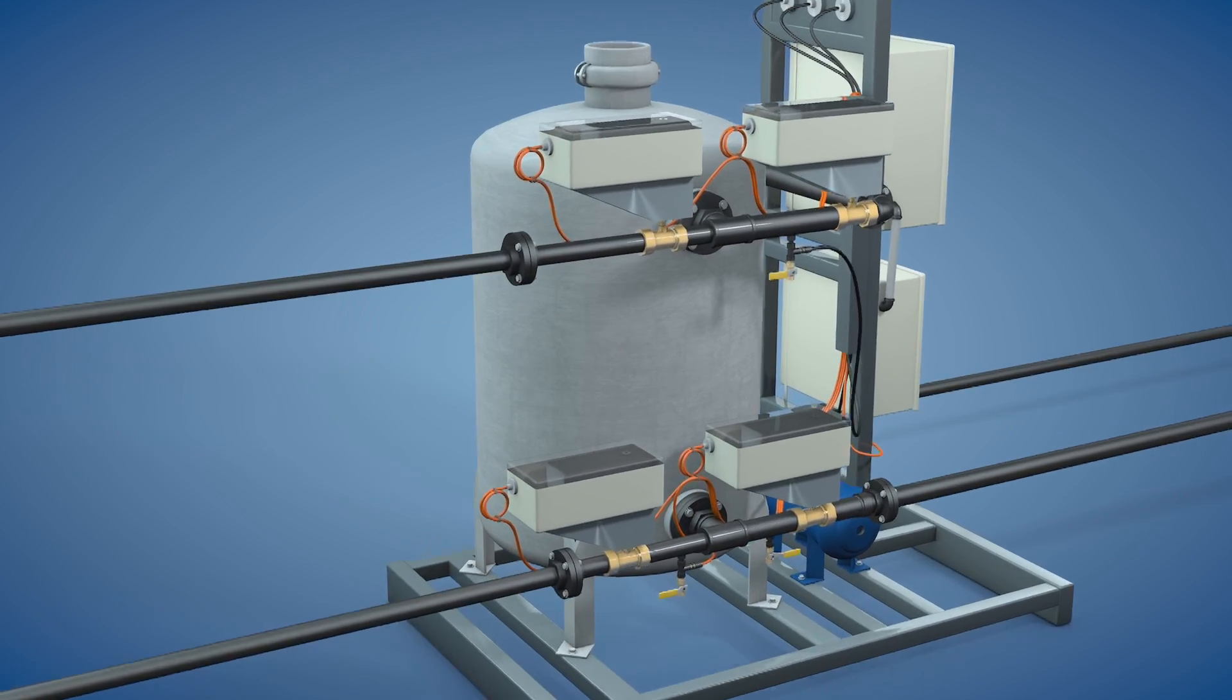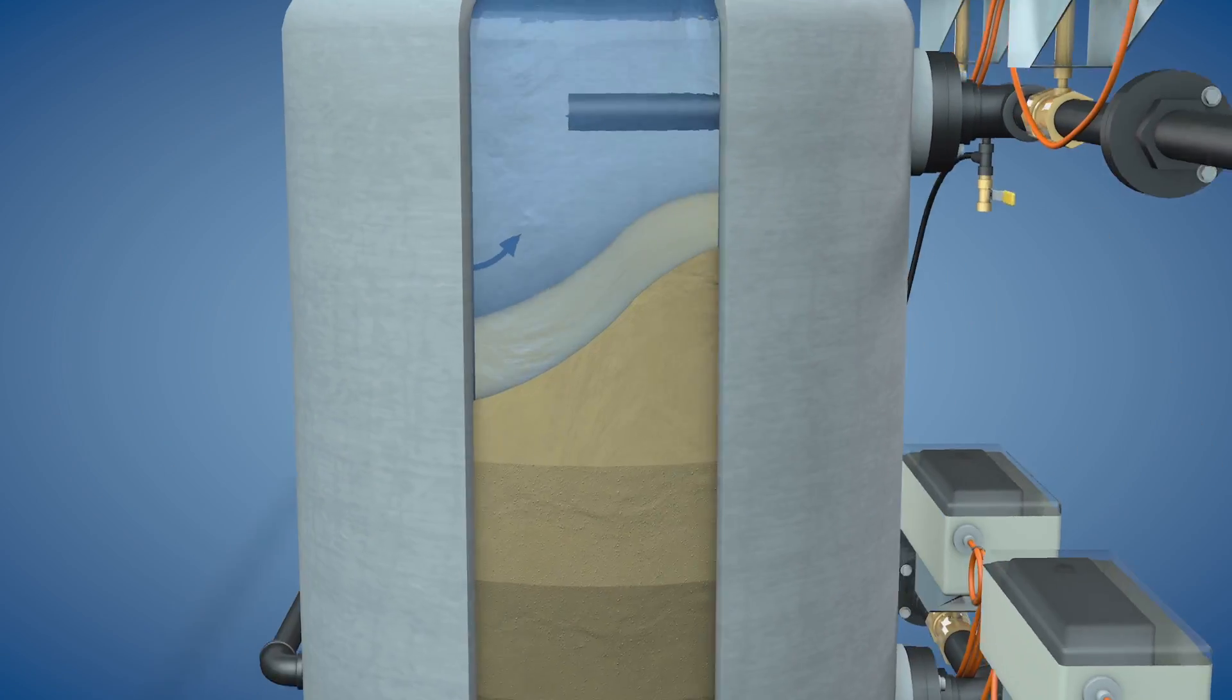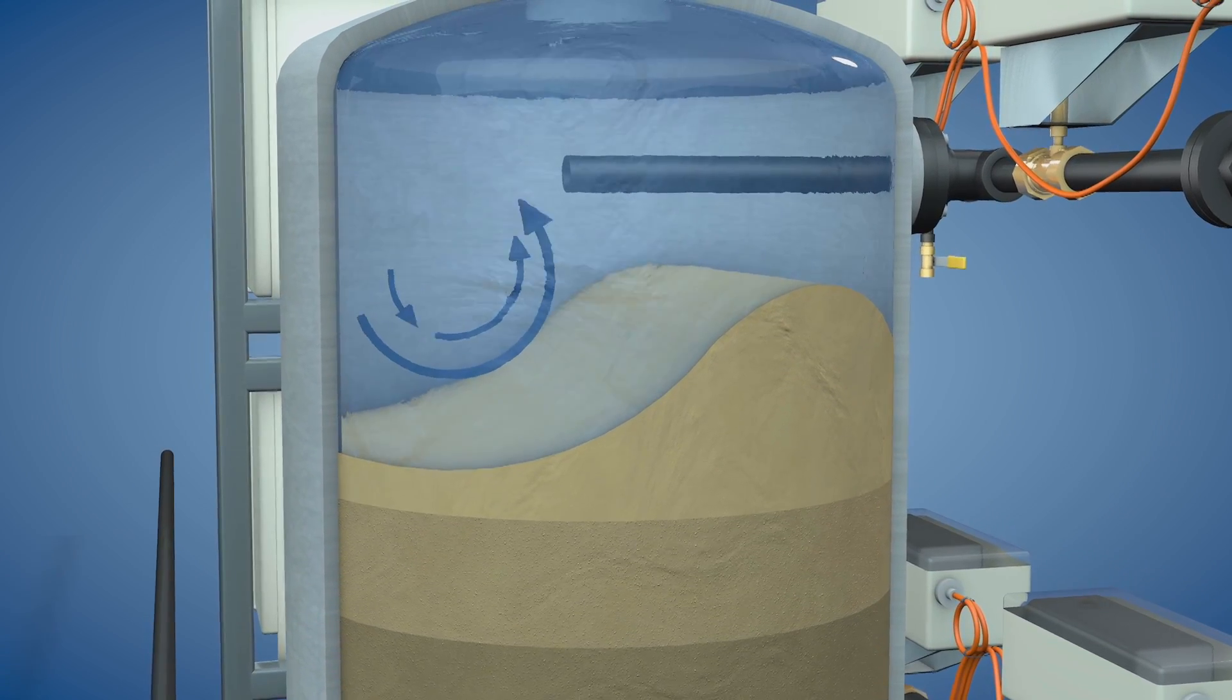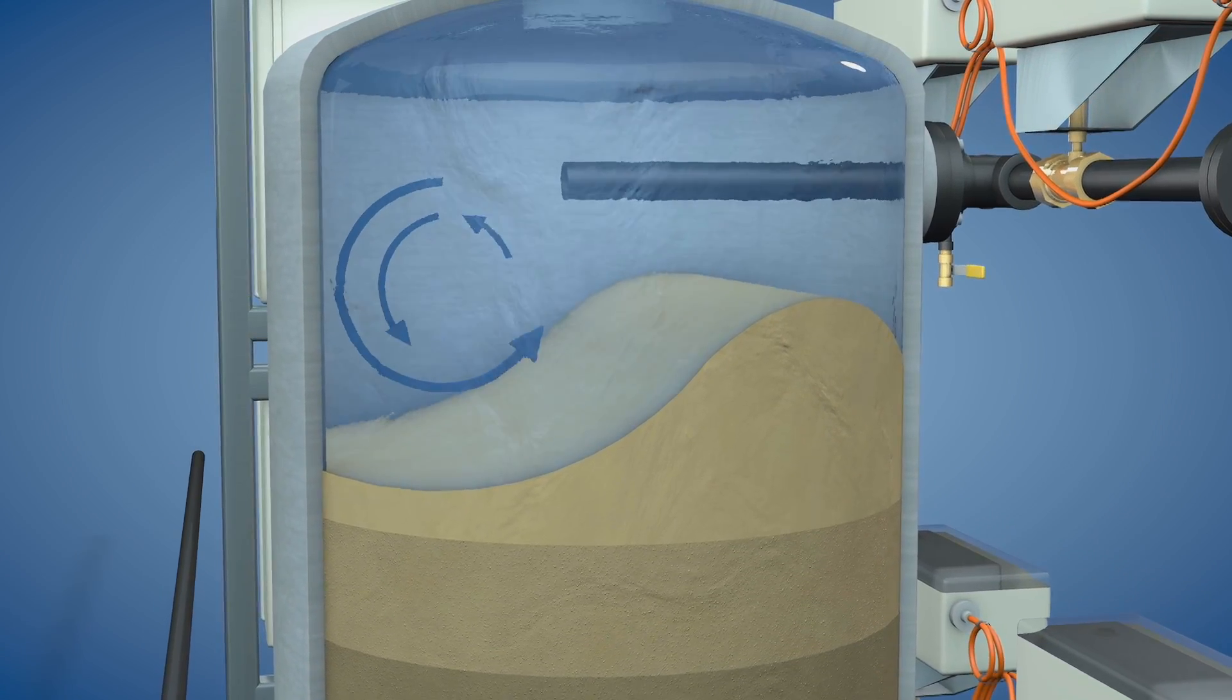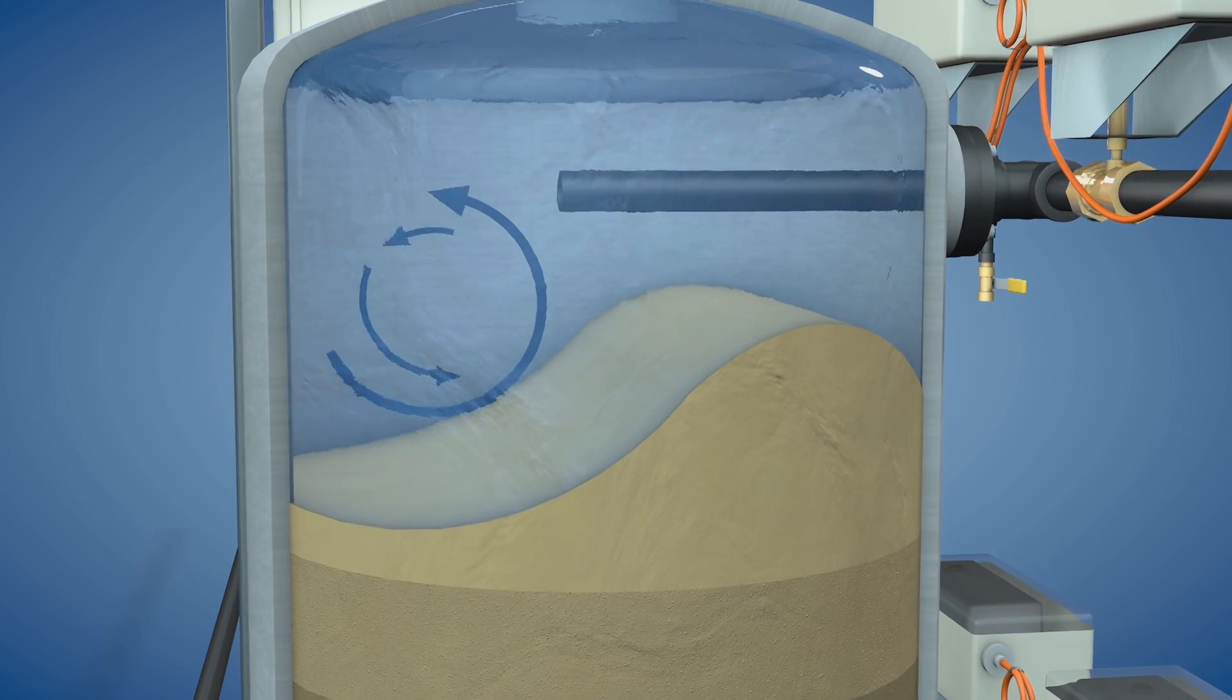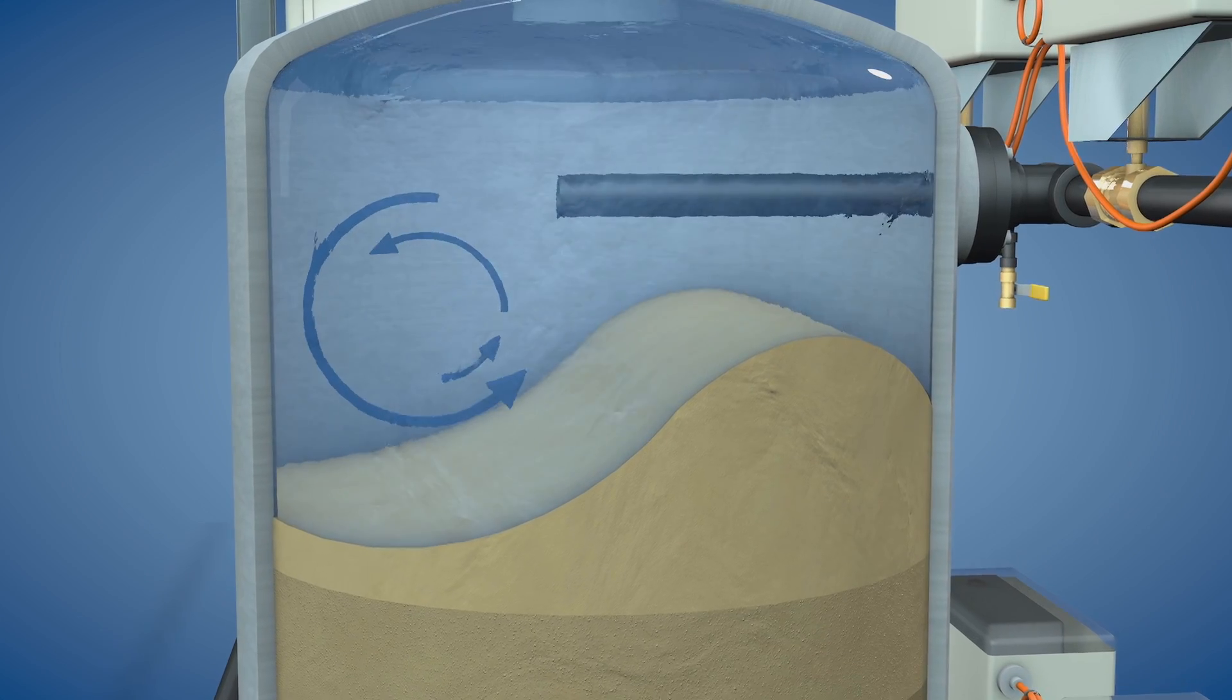As unfiltered water is directed horizontally into the filter tank, particulate trapped on the surface of the ultrafine sand is scrubbed off the surface by tangential forces. This scrubbing action keeps the filtration surface clean and available for continued particle removal.